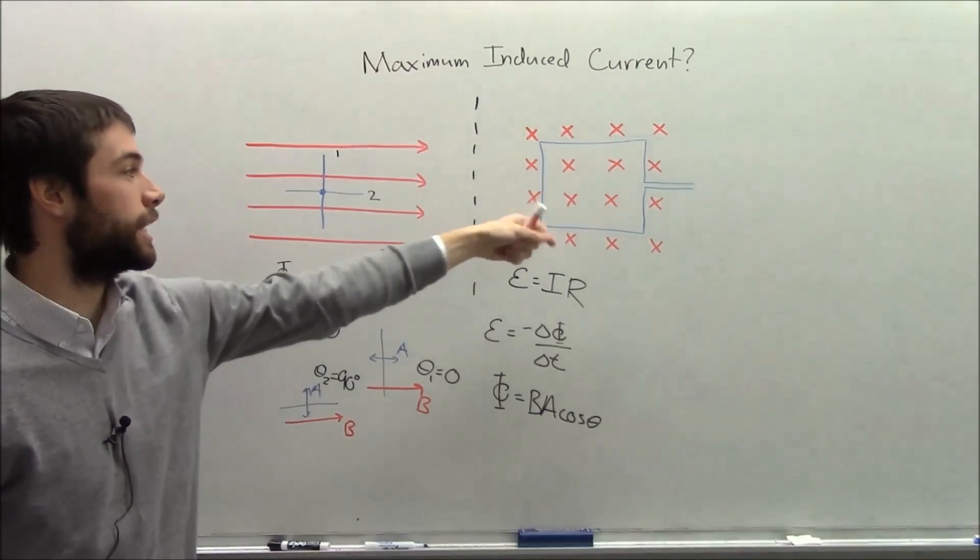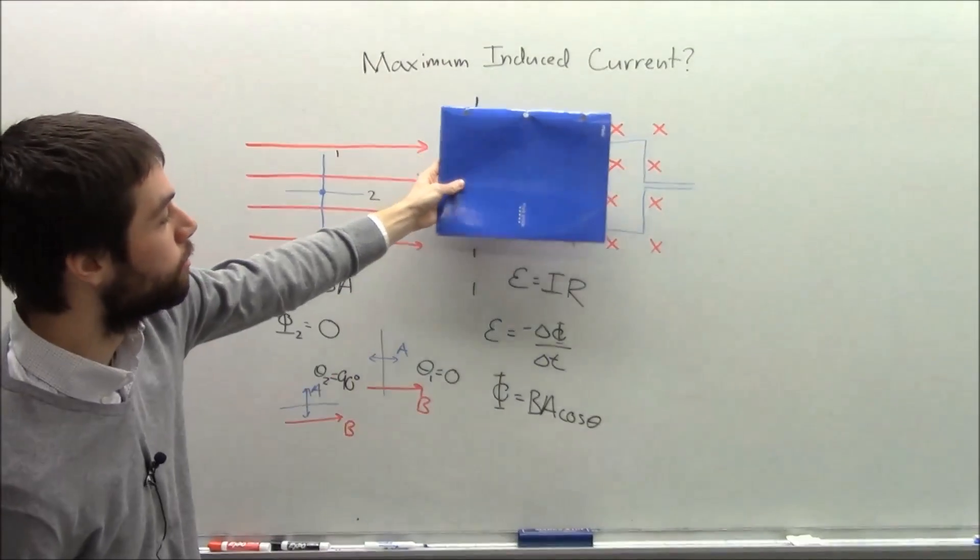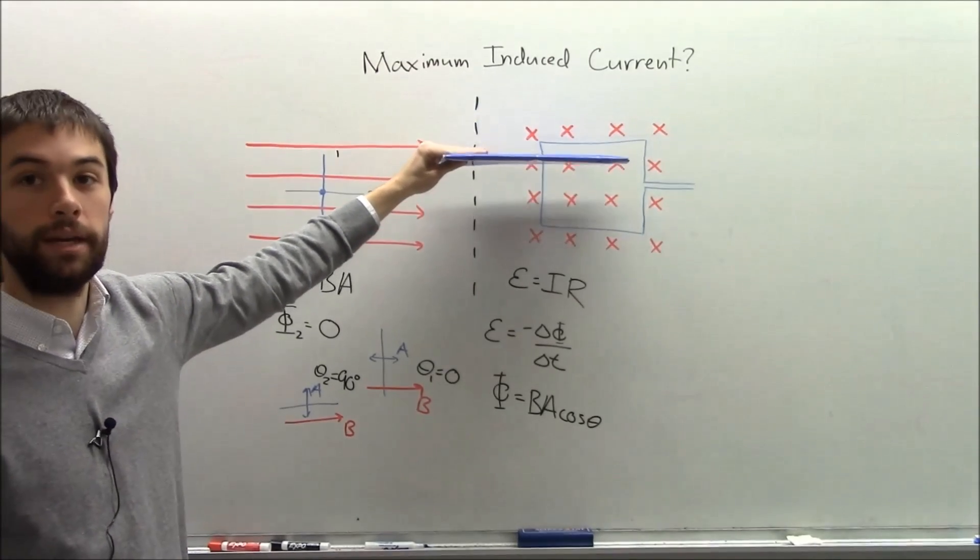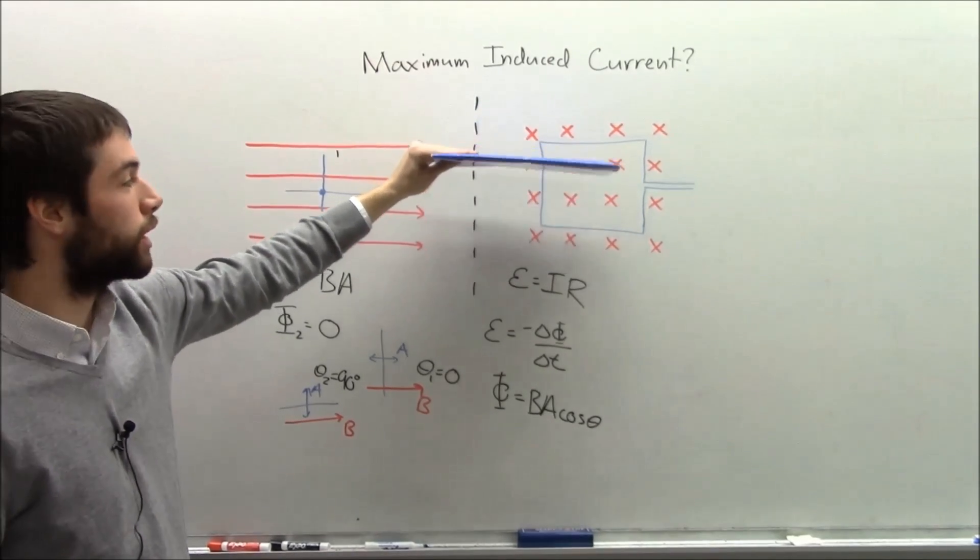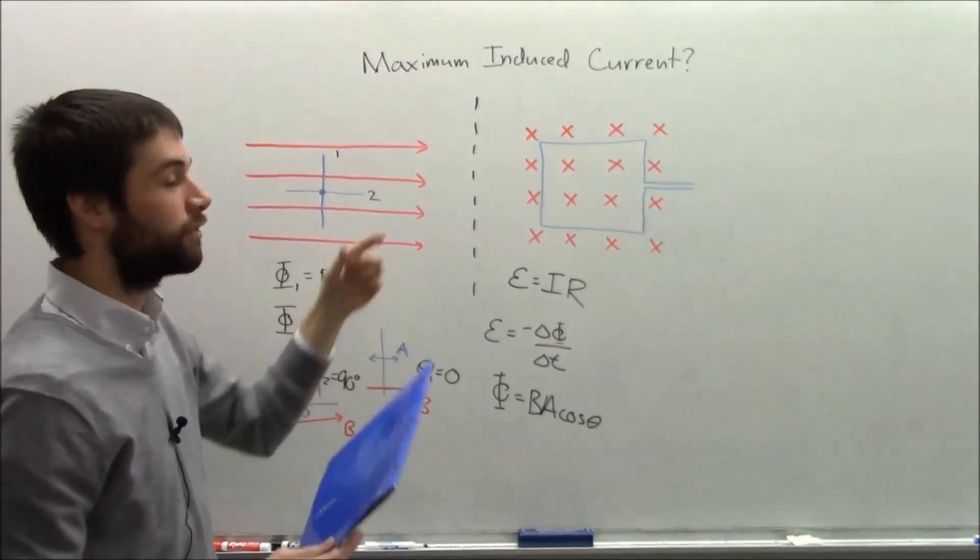So in this case I have four X's, and as I rotate my loop more and more until I'm here, I'll cut off fewer and fewer X's in my loop, and so the flux will go down.